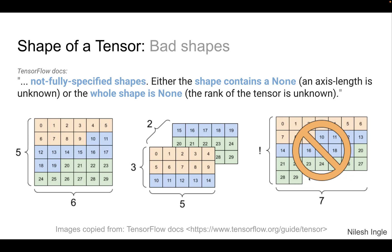So if we look at the shapes of these tensors, we'll get a none. So here we can see either the shape contents are none or the whole shape is none. And if that happens, then TensorFlow is unable to determine the rank of the tensor. And that could throw errors when the program is getting executed.